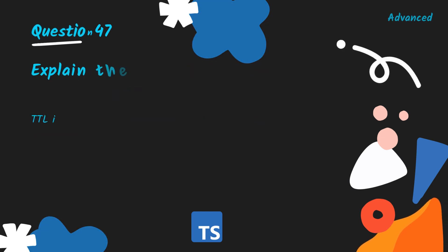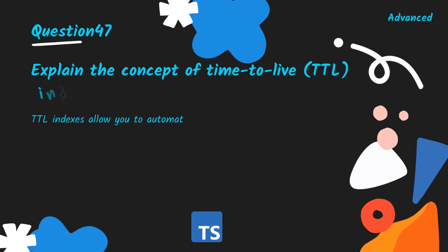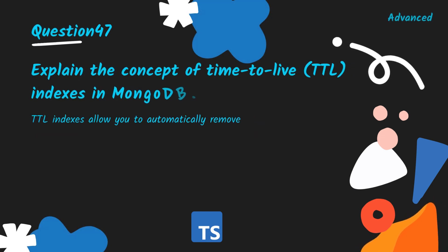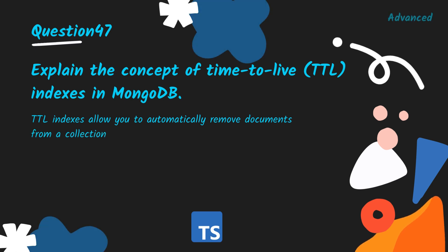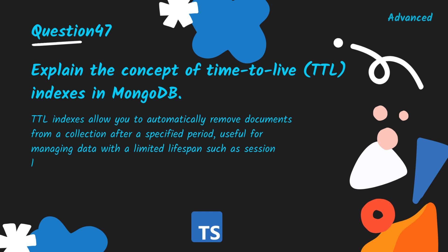Explain the concept of TTL (time to live) indexes in MongoDB. TTL indexes allow you to automatically remove documents from a collection after a specified period, useful for managing data with a limited lifespan such as session logs or cached data.